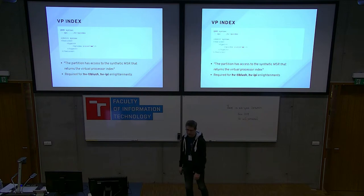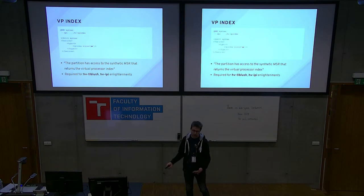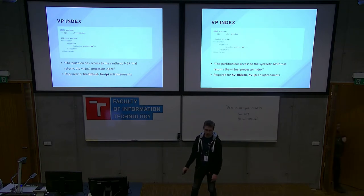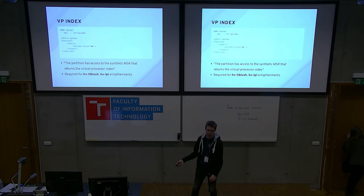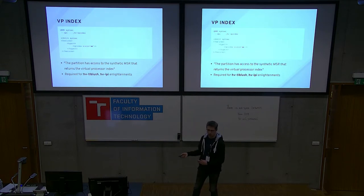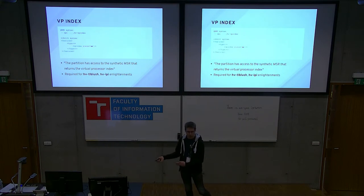Virtual processor index is a simple enlightenment. It provides one additional MSR (model-specific register) where the CPU number is written. This is in addition to the already-existing APIC CPU number, which on KVM will almost always match. On CPU 1 you see 1, on CPU 2 you see 2. This enlightenment is required for others — when Windows makes hypercalls like PVT TLB flush, it uses these numbers to indicate which CPUs need to be flushed.